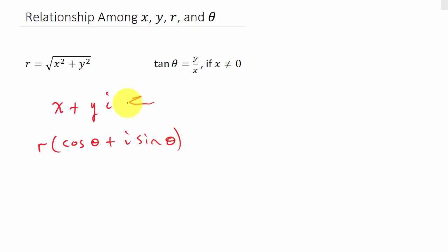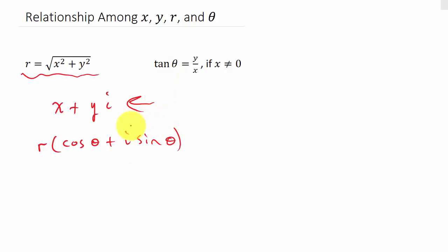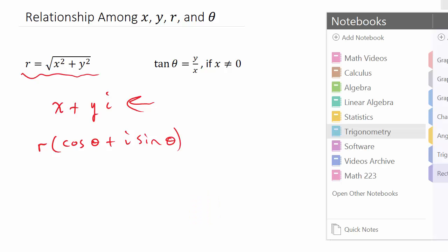We're given the number in rectangular form and we need to find r and theta. To find r, use r = √(x² + y²). To find theta, use the fact that tangent theta equals y over x.